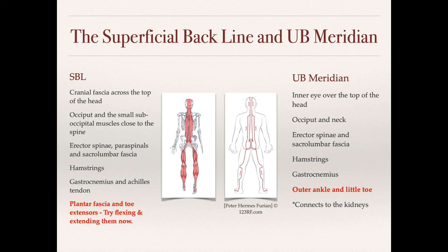Welcome to the section on the superficial backline. Let's begin by looking at some of the basic anatomy. The superficial backline includes the cranial fascia across the top of the head, as well as the occiput and the small suboccipital muscles that are close to the spine.